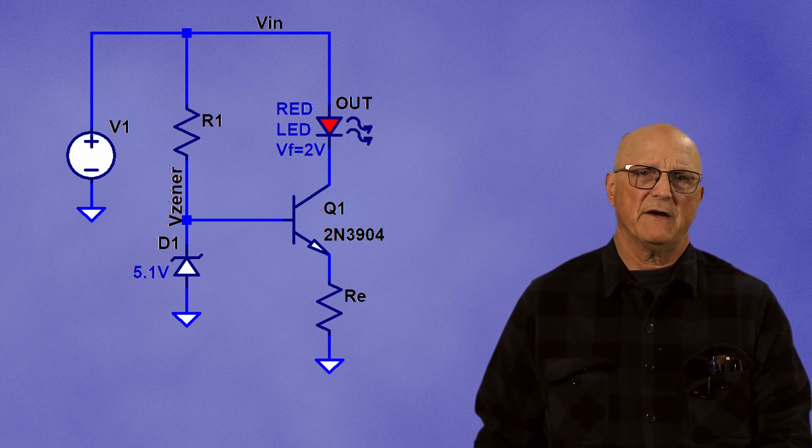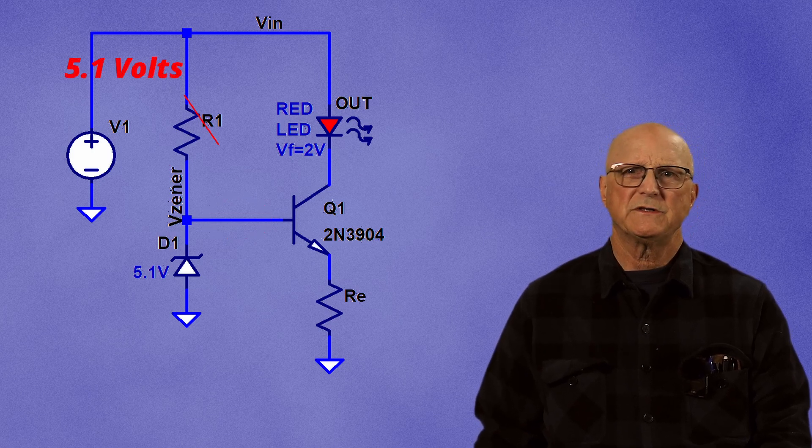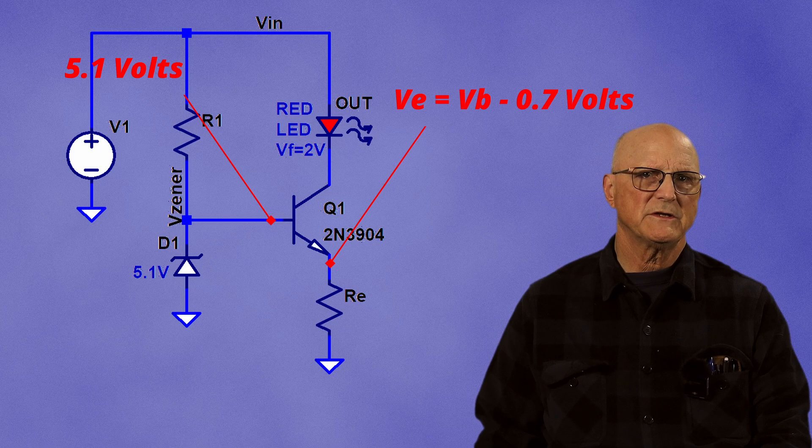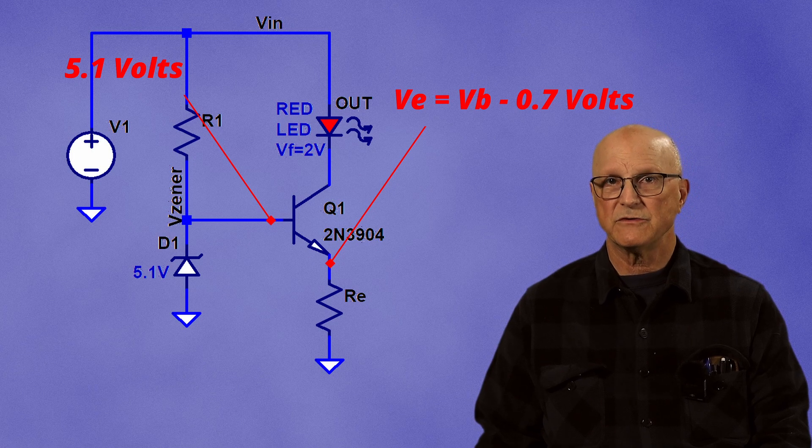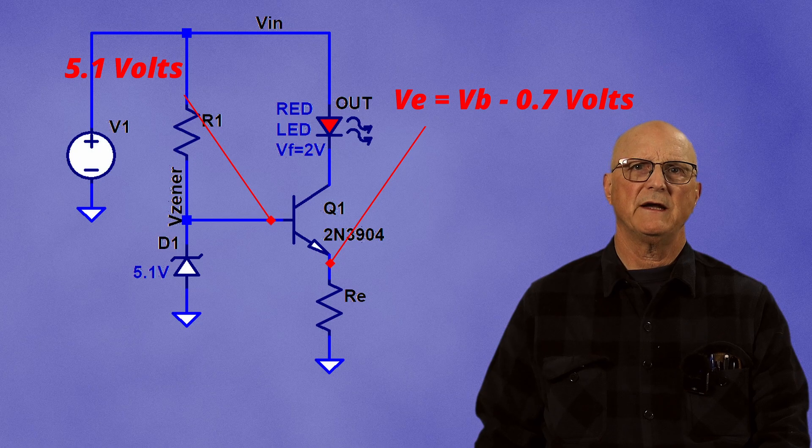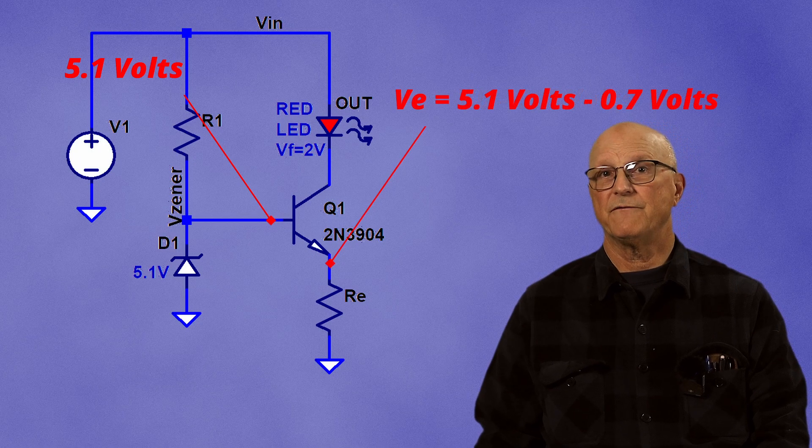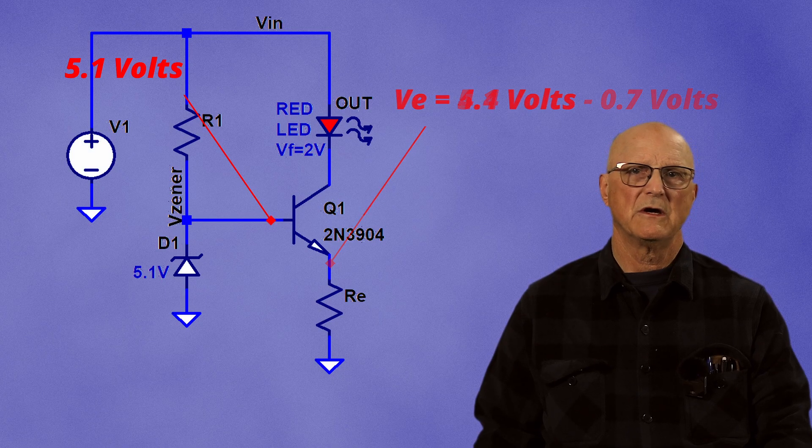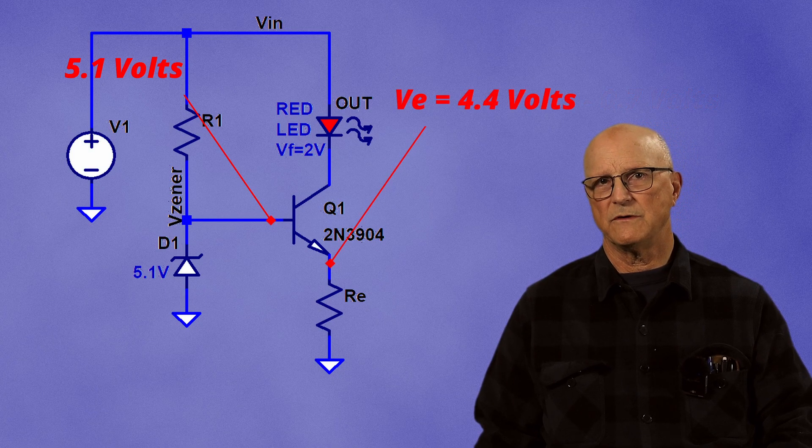Now, idealizing everything, the base voltage is a nominal 5.1 volts from the Zener voltage. The emitter voltage is 0.7 volts below the base voltage. So the idealized emitter voltage will be 5.1 volts minus 0.7 volts or 4.4 volts.